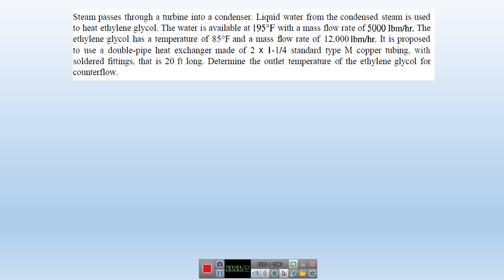Here is the example: you are asked to design a double pipe heat exchanger. The hot fluid is water with an inlet temperature of 195°F and a mass flow rate of 5,000 lbm/hr. The exit temperature is unknown. The cold fluid is ethylene glycol with a temperature of 85°F and a mass flow rate of 12,000 lbm/hr. The tube length is 20 feet. You are asked to find the outlet temperature of the ethylene glycol.